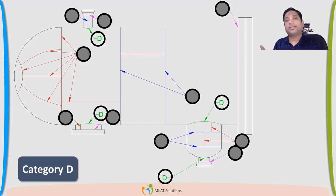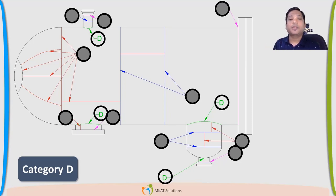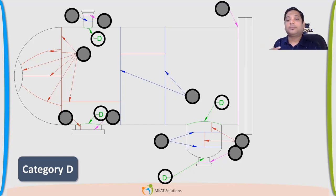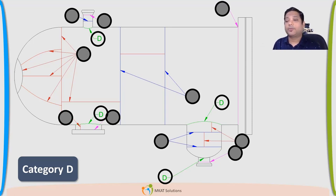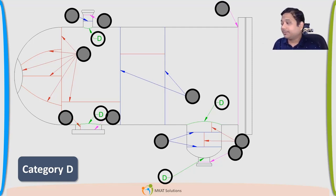So to summarize: Category A is long seam, Category B is circumferential seam, Category C is any flat head or flange connected to nozzle or shell, and Category D is a hemispherical head connection. These are Category D joints.